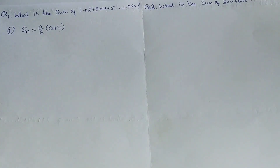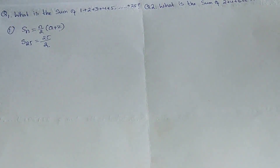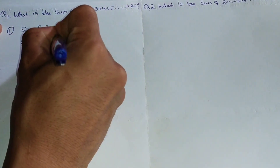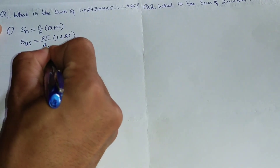Using the formula, we substitute the values. The sum of 25 terms equals 25 divided by 2, multiplied by the first term 1 plus the last term 25. So 25 multiplied by 26, because 1 plus 25 equals 26. Then 26 divided by 2 equals 13. So 25 multiplied by 13 gives us the answer: 325.